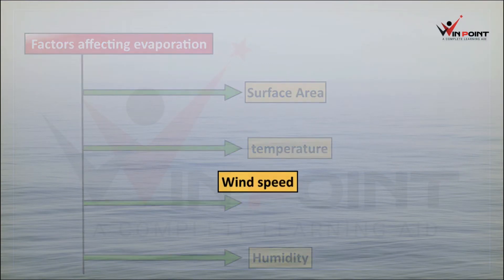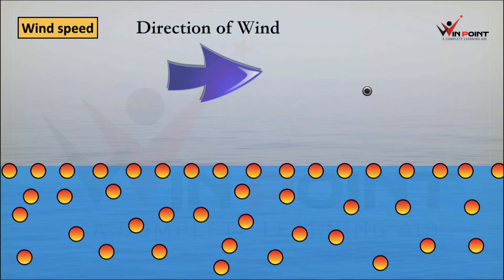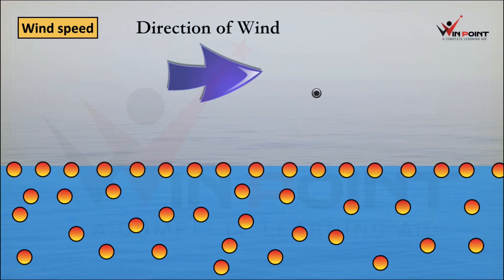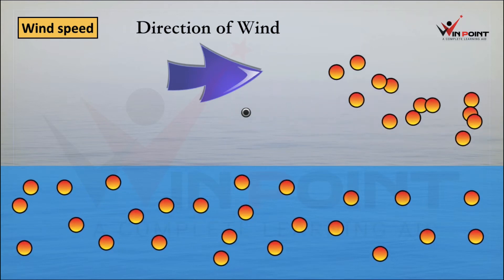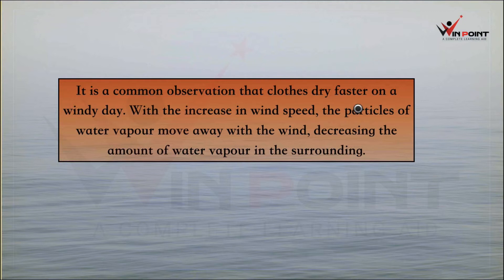Next one is wind speed. When there is heavy wind, there won't be any water vapor in the atmosphere because the wind will take away all the water vapor present in the surrounding. Because of that, the rate of evaporation will increase — the particles of water will fill that gap. It is a common observation that clothes dry faster on a windy day. With the increase in wind speed, the particles of water vapor move away with the wind, decreasing the amount of water vapor in the surrounding, and the rate of evaporation will be more.